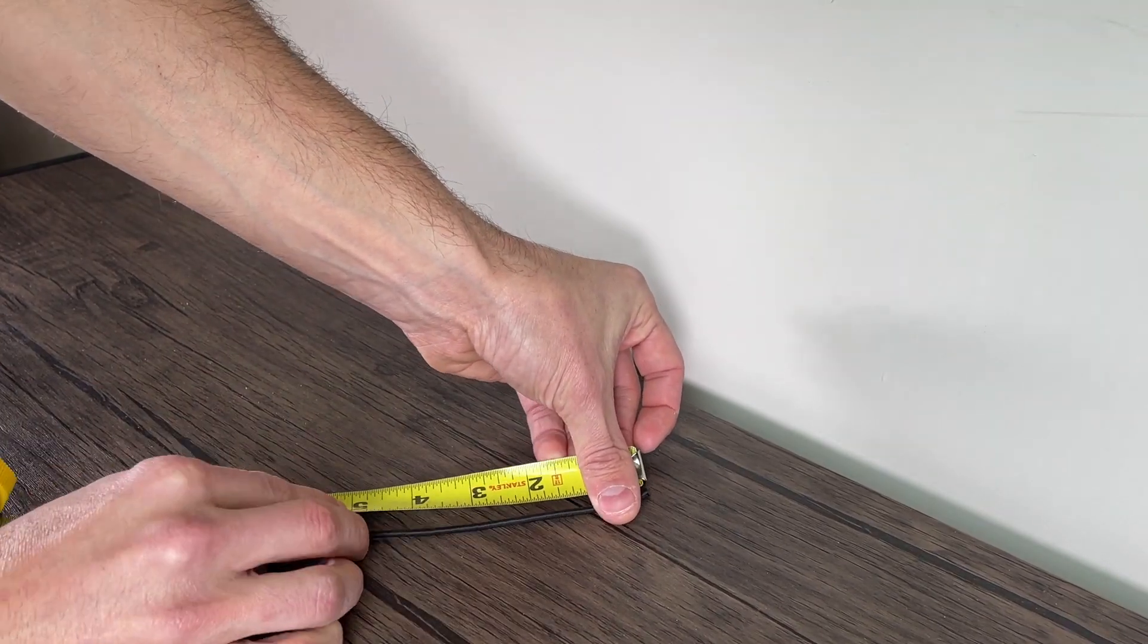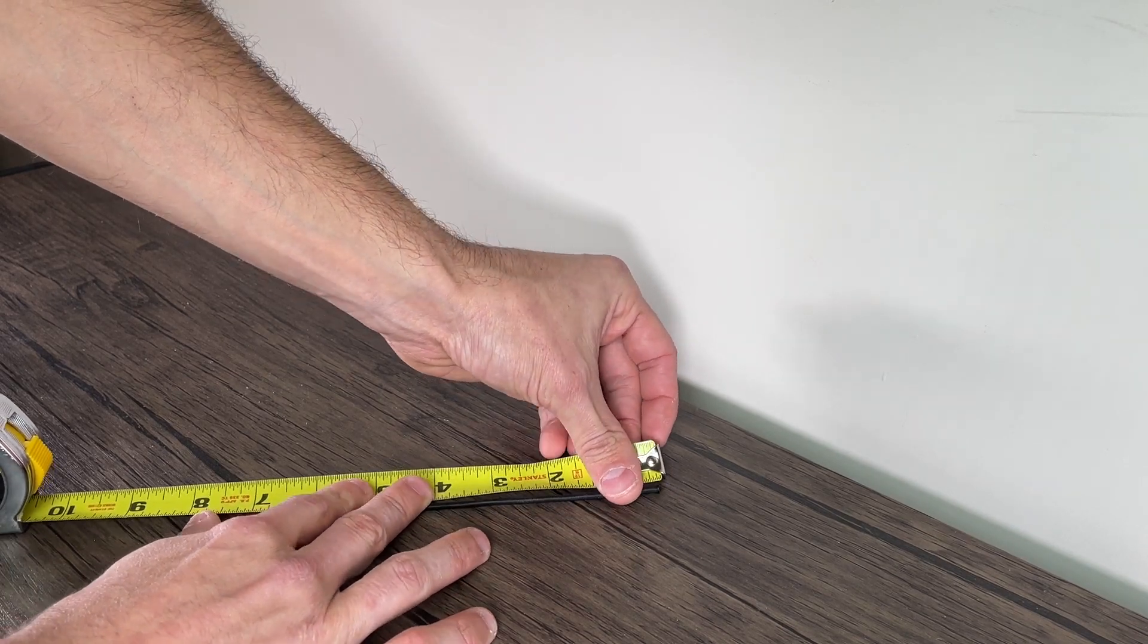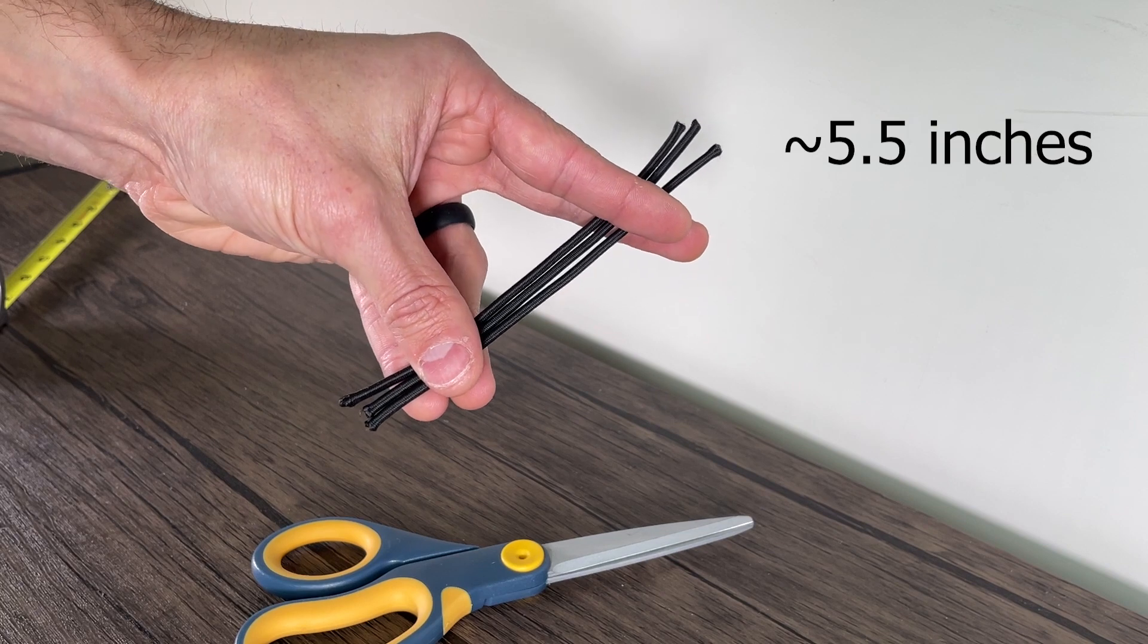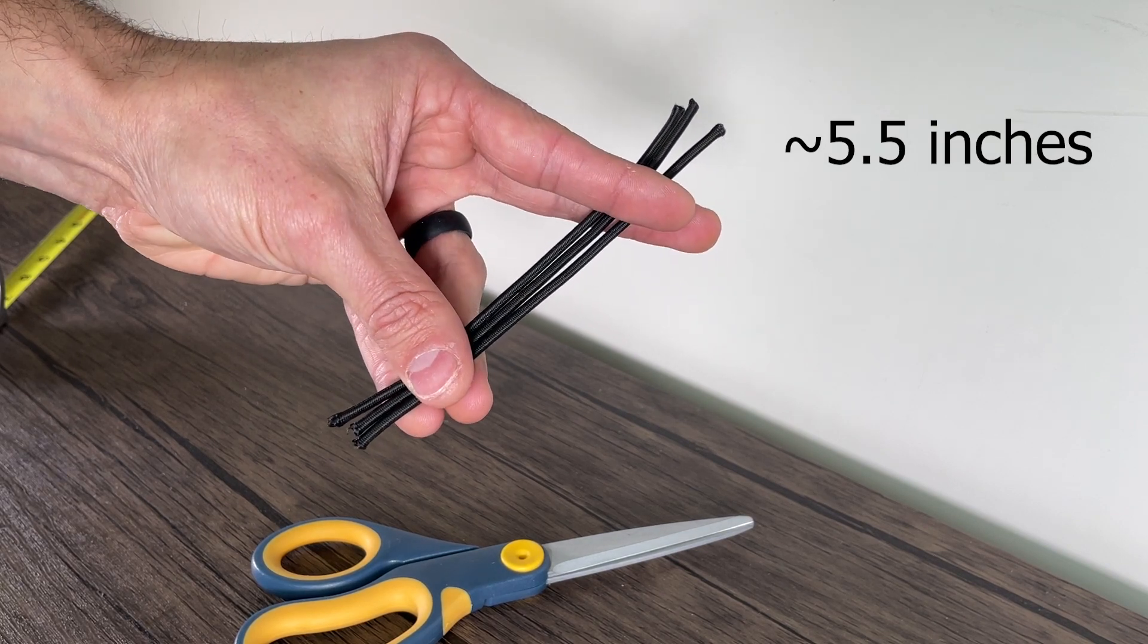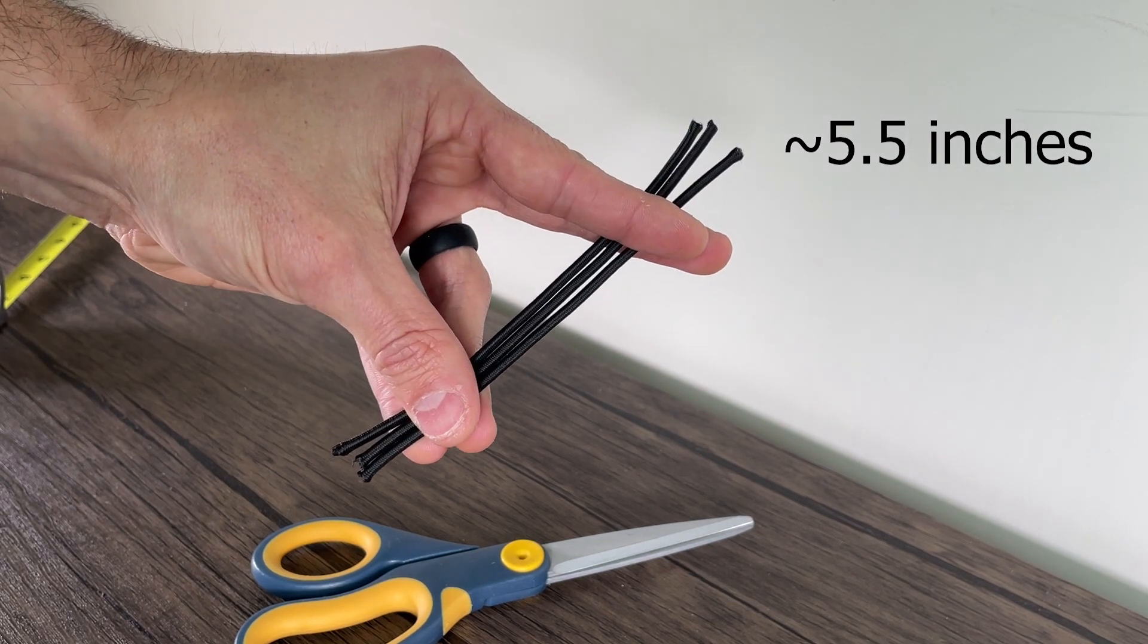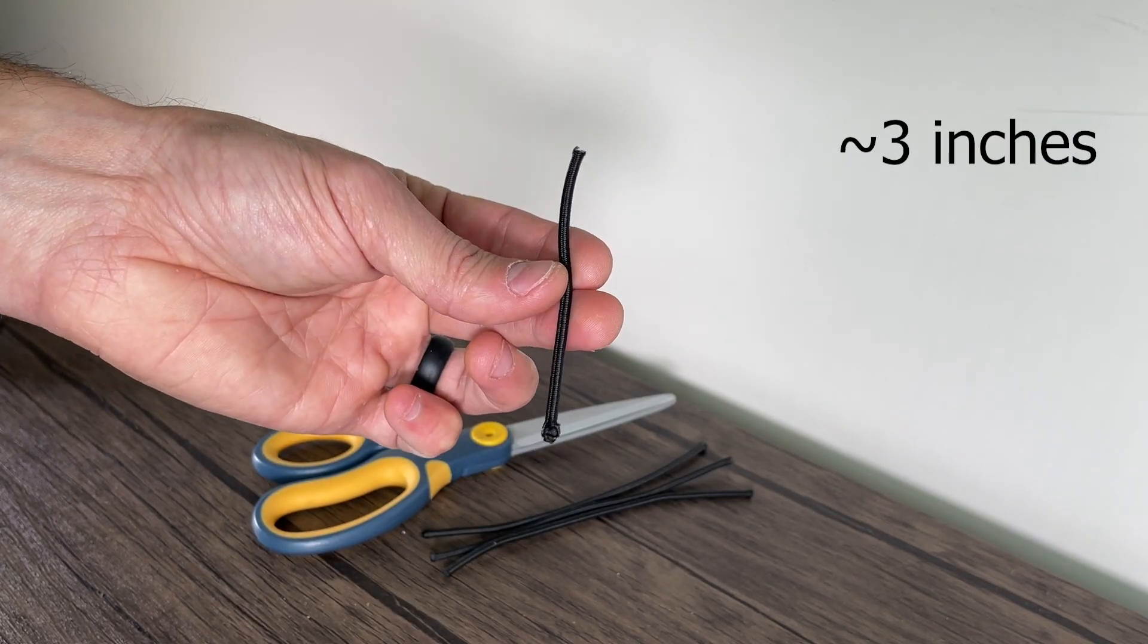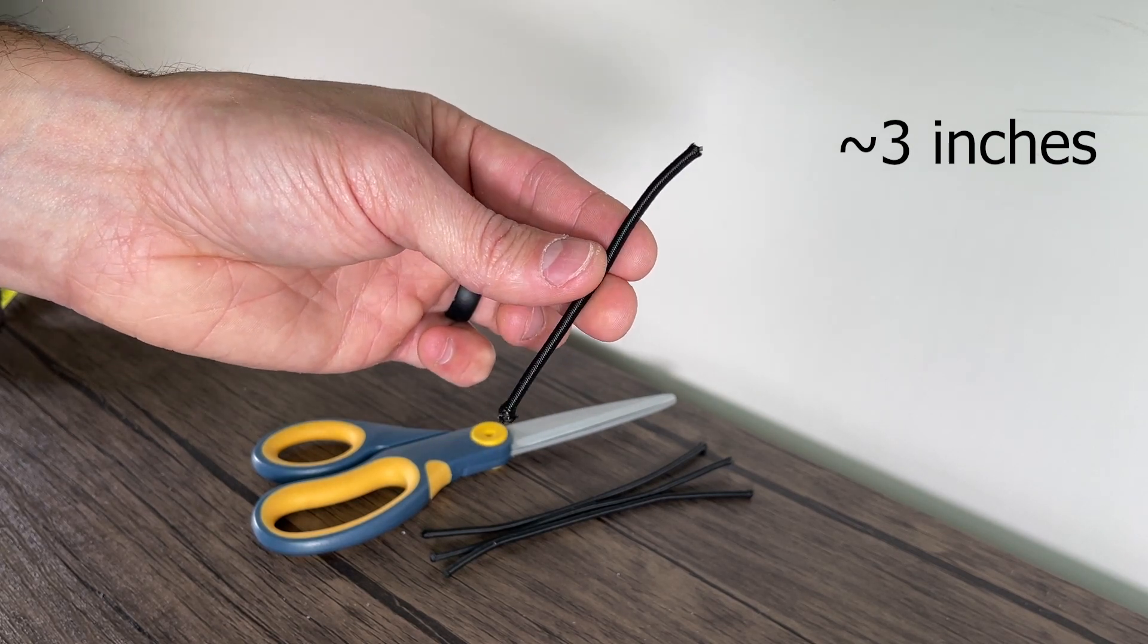To start, cut a piece of bungee cord to a length of approximately 5.5 inches. It doesn't need to be exact. Then, use the first piece to cut two other pieces the same length. This step is important to get all three cords as close to the same length as possible. Lastly, cut a fourth piece approximately 3 inches long. This piece will be cut shorter later so don't worry about the exact length.